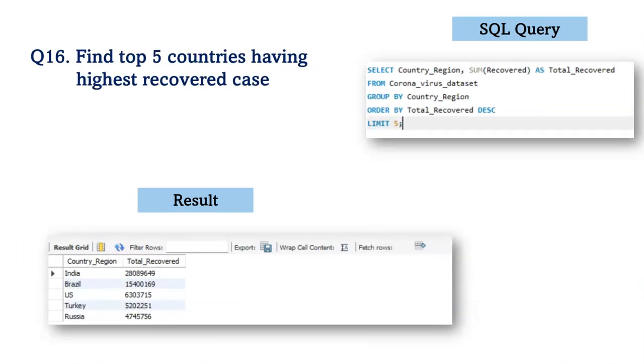Next, we find the top five countries having the highest recovered cases. For this, we used the SUM function for the recovered column, grouped by country and ordered by total recovered cases. India, Brazil, US, Turkey, and Russia are the top five countries with the highest number of recovered COVID cases. After analyzing the COVID dataset using SQL, several insights have been uncovered, providing valuable information for understanding the progression and impact of the COVID-19 pandemic. Thank you.